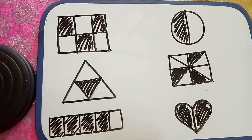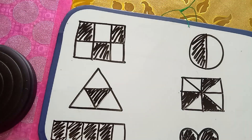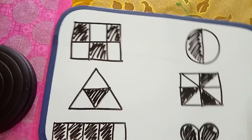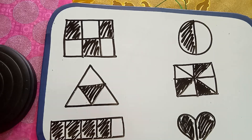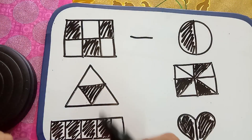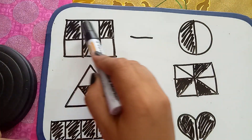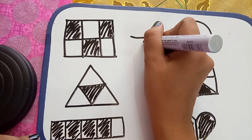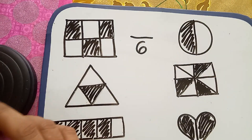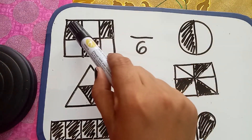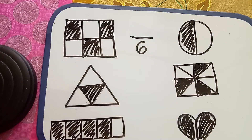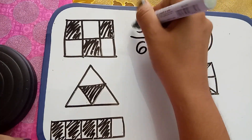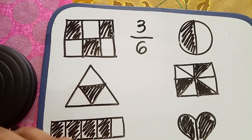Let us apply our knowledge in fraction by giving the equivalent symbol or fraction of this example. In number one, how many parts? One, two, three, four, five, six. So the denominator is six. How many parts were taken? One, two, three. So the numerator is the shaded part in a fraction — numerator is three.